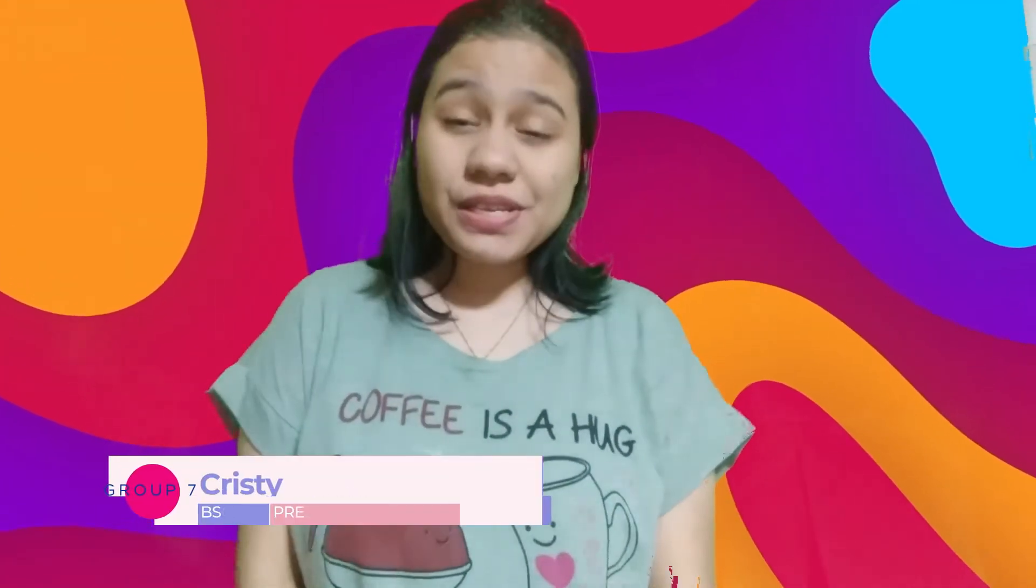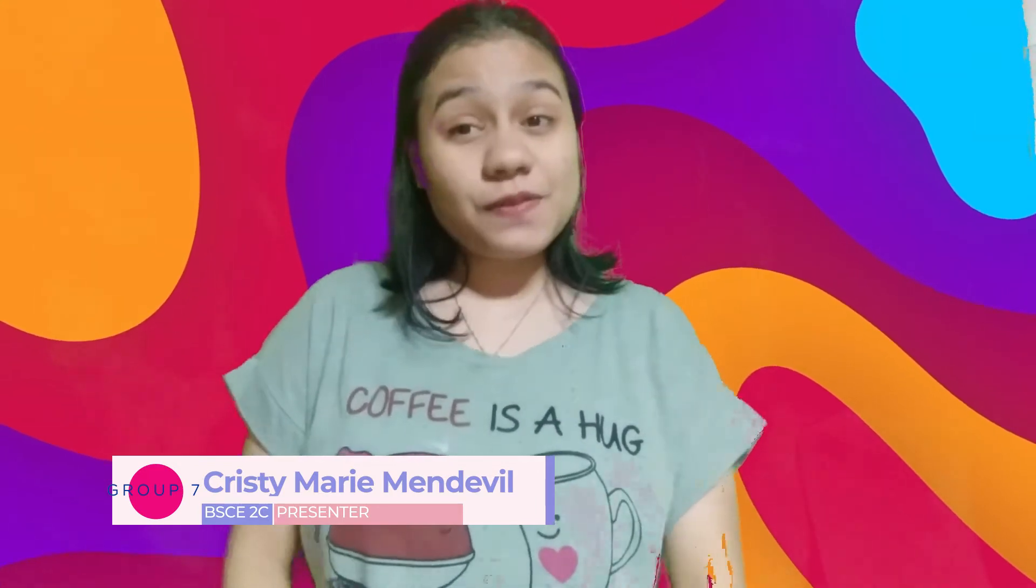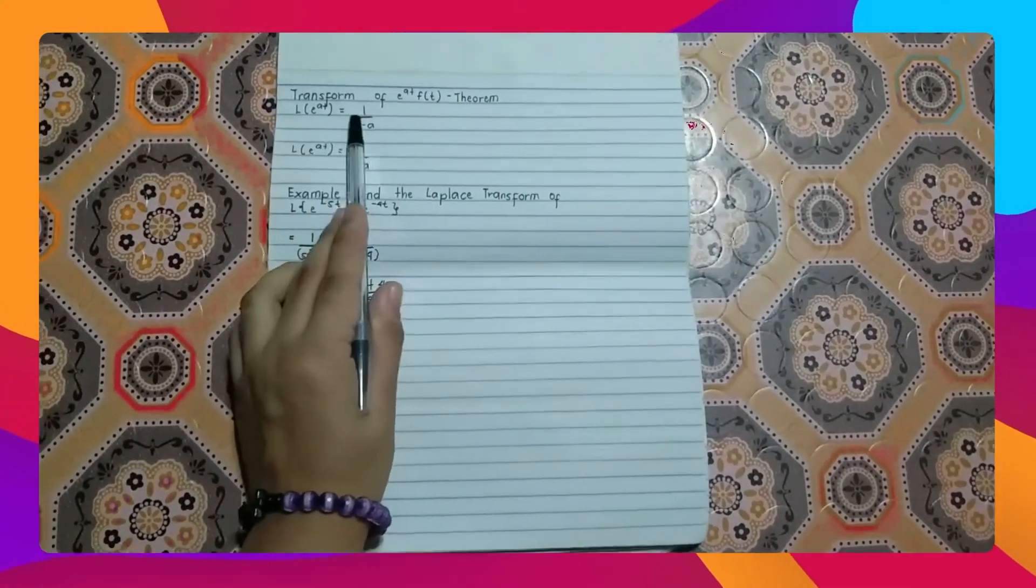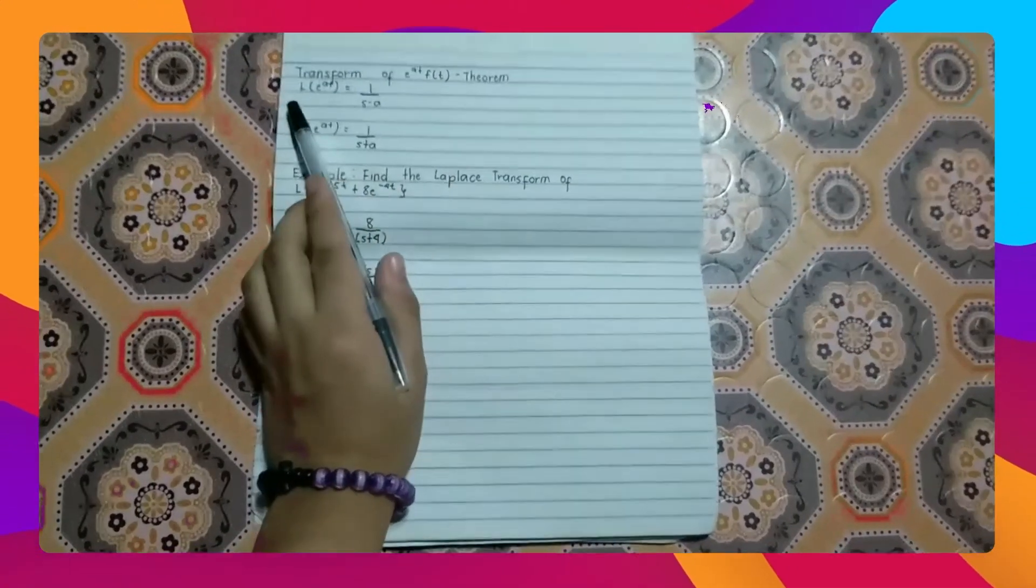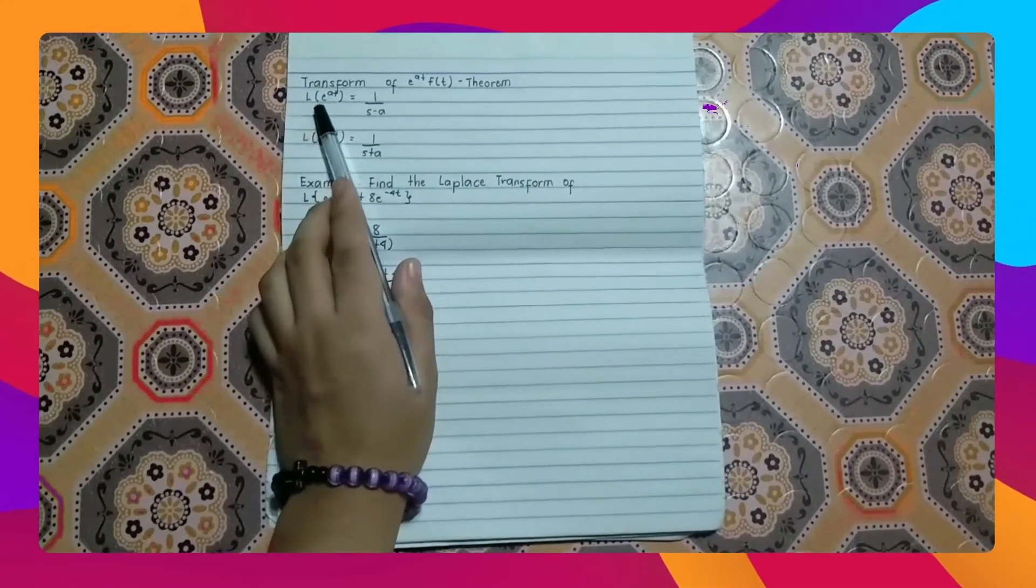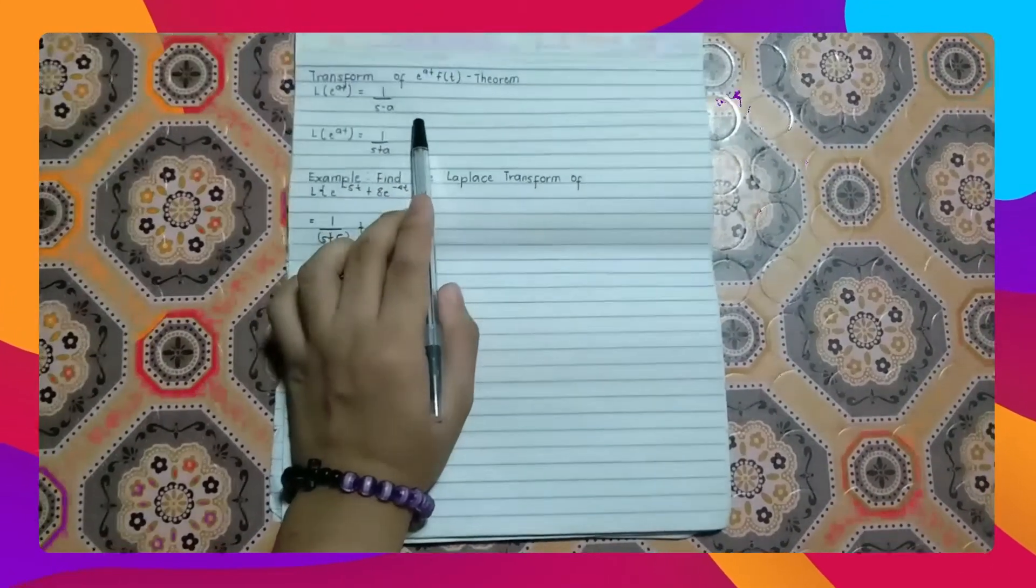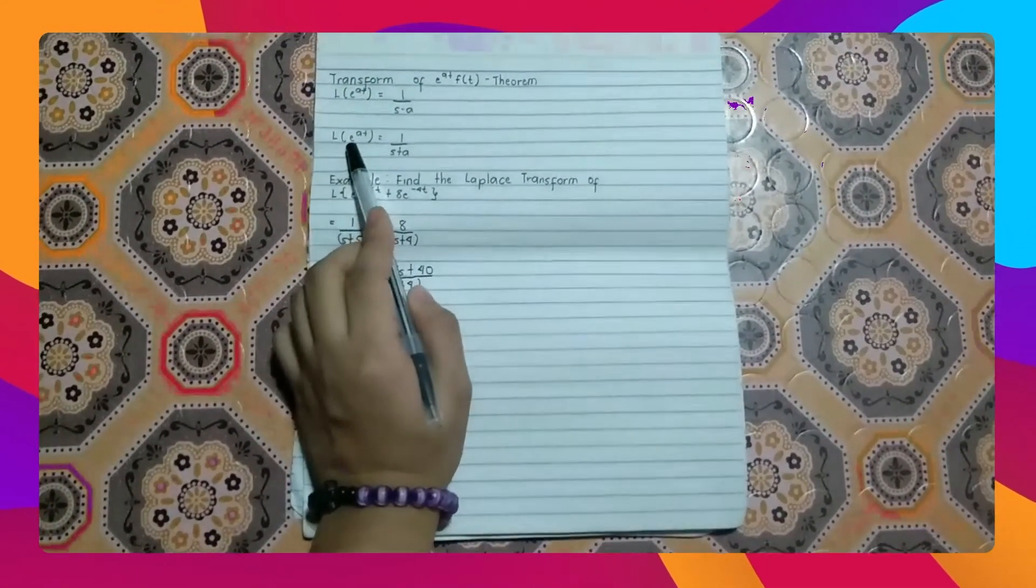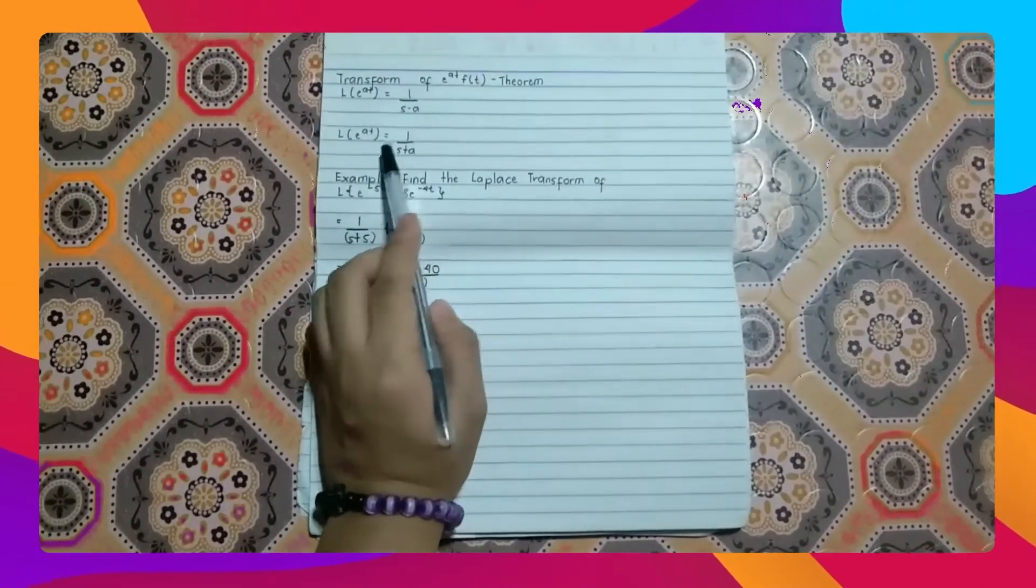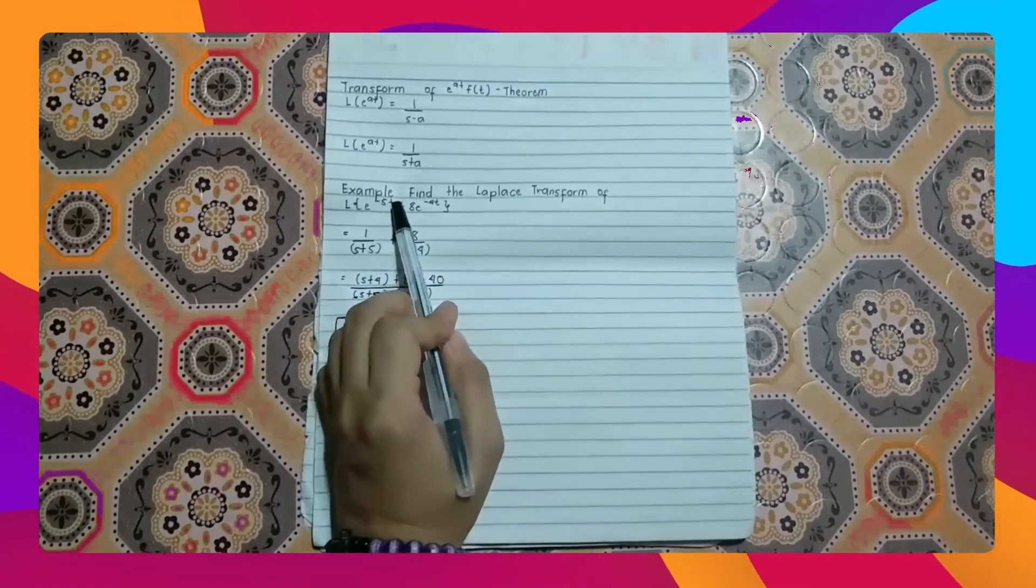Hi everyone! My name is Christy, and for today's video, we are going to talk about the Laplace transforms of functions, specifically the transform of e raised to at theorem. The formula for Laplace transform of e raised to at is equal to 1 over s minus a. Or you can also use Laplace transform of e raised to negative at is equal to 1 over s plus a.